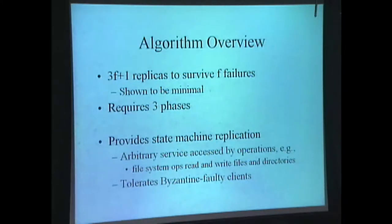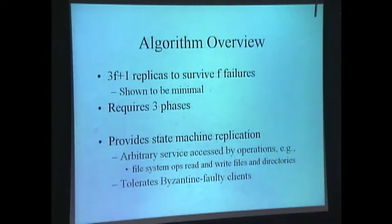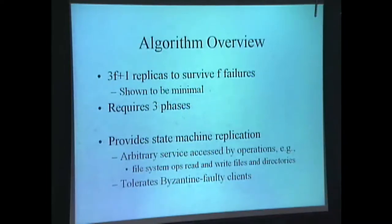In contrast to fail-stop failures, when you have Byzantine failures you require more replicas and more phases. You require 3f+1 replicas to survive f failures — to survive one failure, you now need four replicas, not three. Furthermore, your replication protocol must have three phases, not two. It was already known that 3f+1 replicas are needed; our algorithm is more efficient than previously invented algorithms.